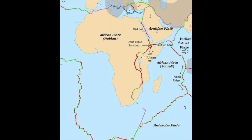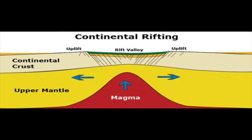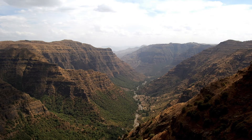If the rifting is successful, a new ocean basin will form. Rifting is driven by two processes: convection within the mantle and plumes. Rifting can be caused by hot material from a mantle plume reaching the continental plate and causing the overlying lithosphere to heat up. We see this rifting happening today in the East African Rift Valley.